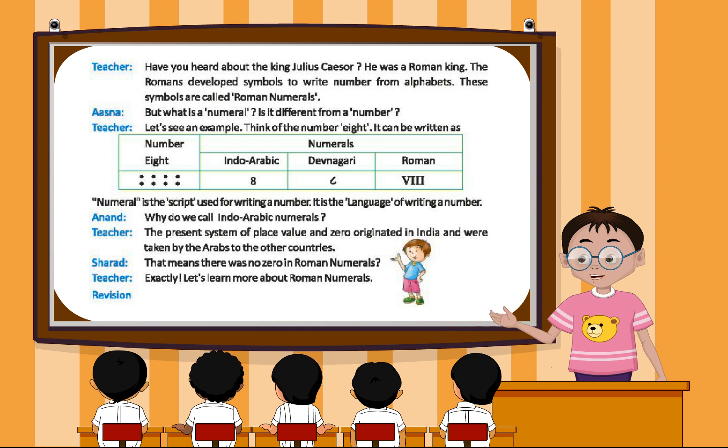Anand: Why do we call them Indo-Arabic numerals? Teacher: The present system of place value and zero originated in India and were taken by the Arabs to the other countries.